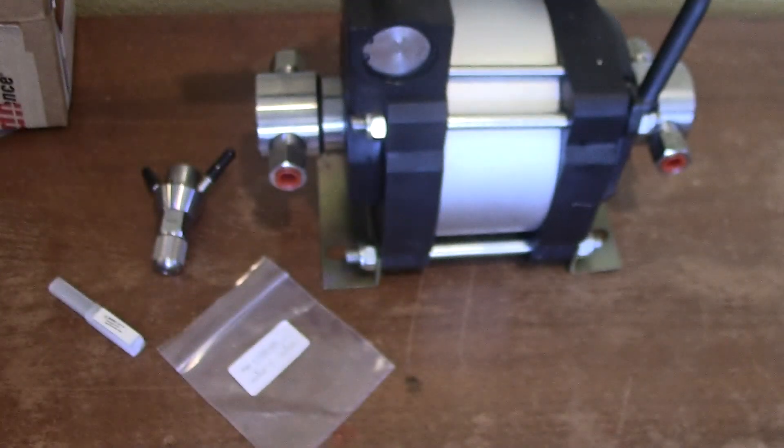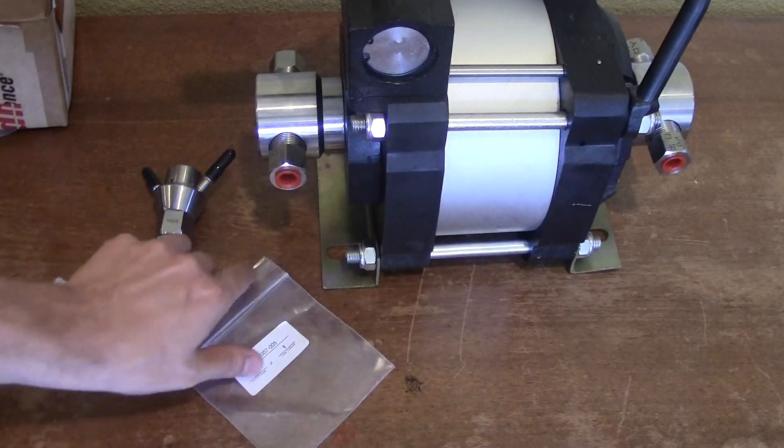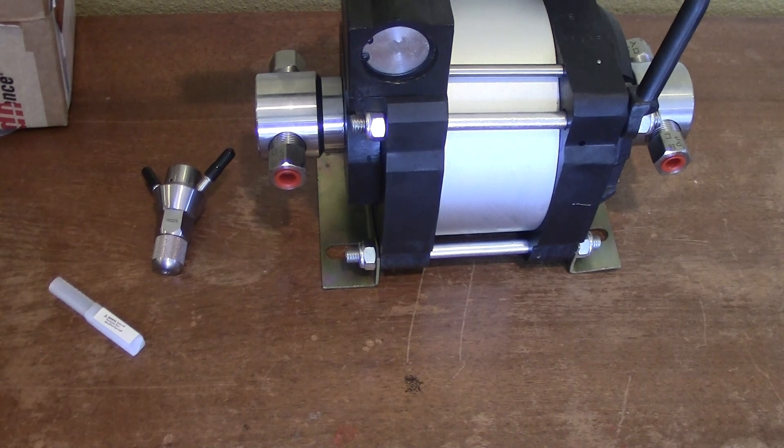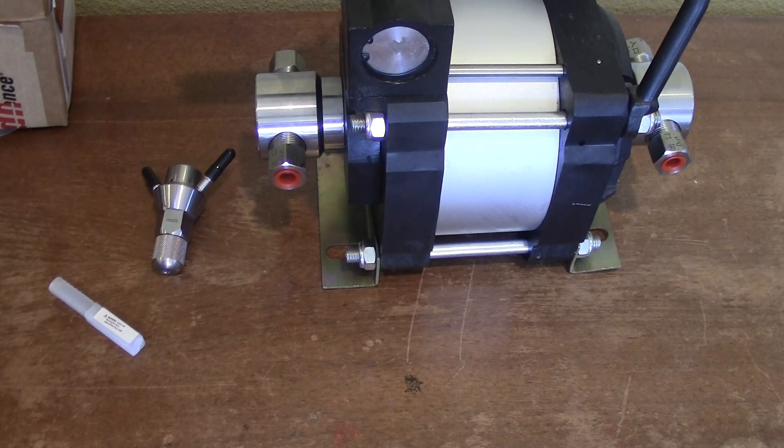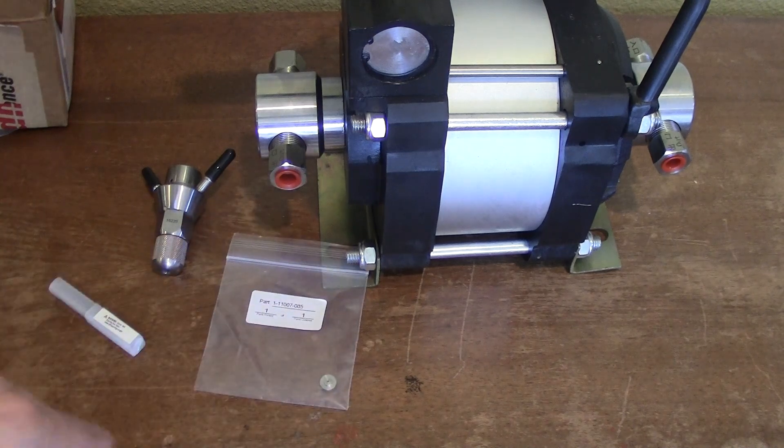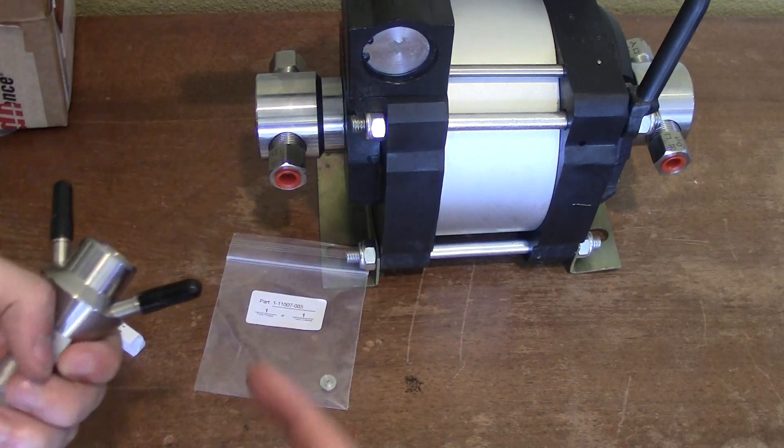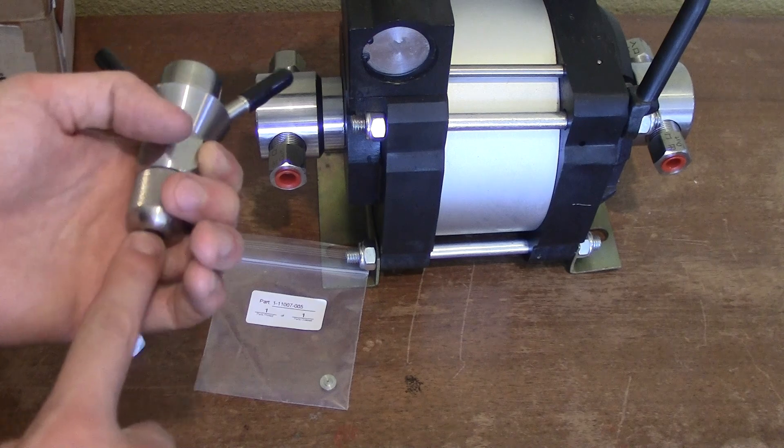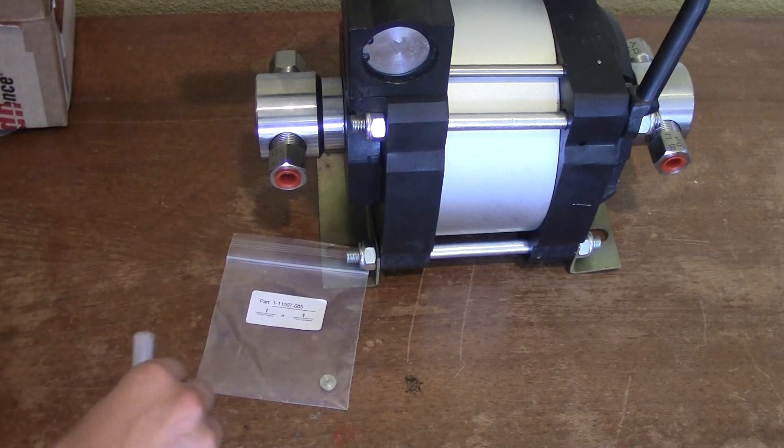But there's a tiny little hole in there, in the ruby. And that hole is only five thousandths. So that's two and a half human hairs in diameter. And so that's what establishes the water jet beam.